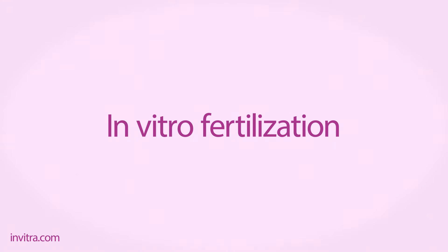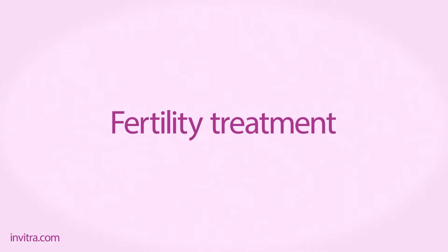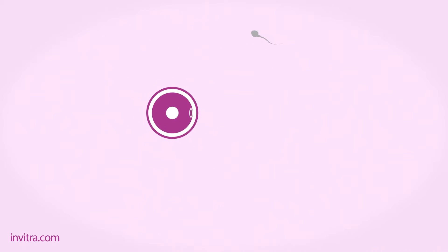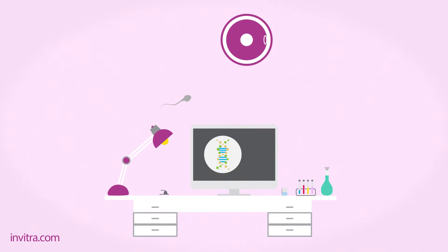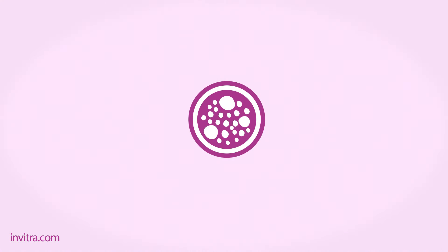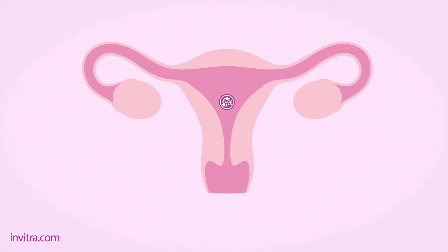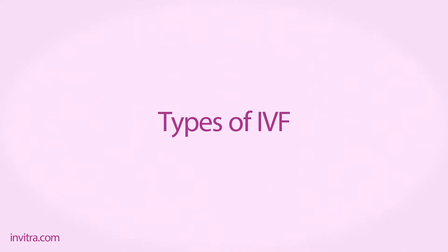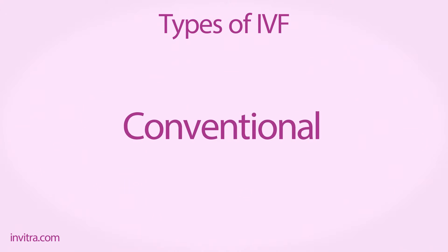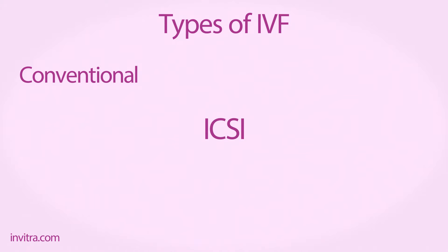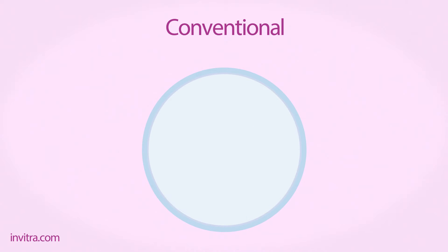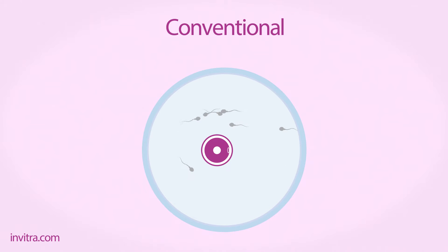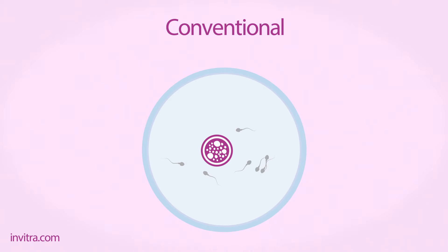In vitro fertilization is a fertility treatment by which the egg and the sperm are fused together in a laboratory. The resulting embryo is then transferred to the mother's uterus. The egg-sperm binding can be done in two different ways: either through conventional IVF or intracytoplasmic sperm injection (ICSI). When done by conventional IVF, both gametes are placed in a small petri dish, so that the sperm is able to penetrate the egg cell by itself, thereby creating an embryo.